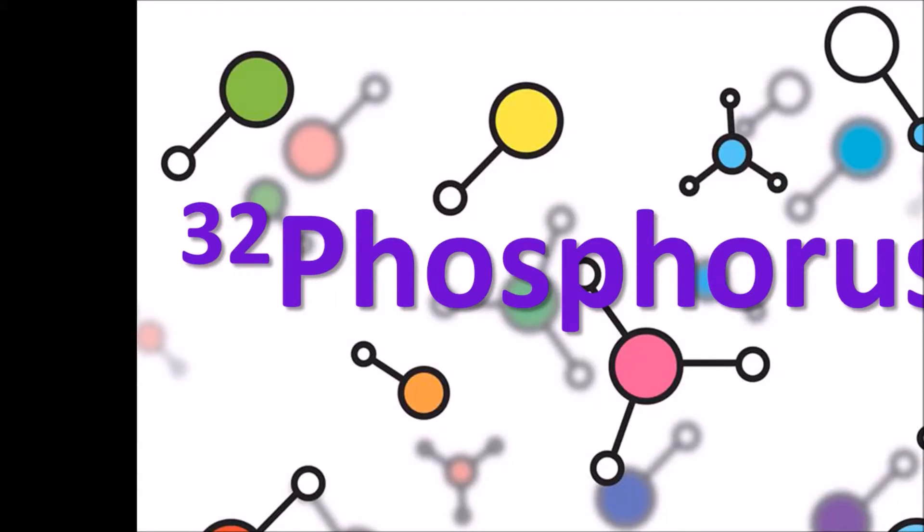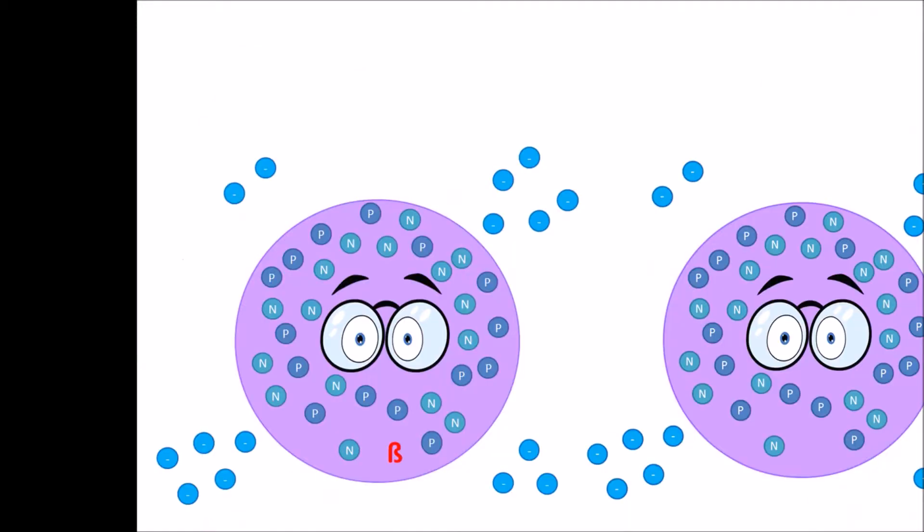Phosphorus-32 is a radioisotope that has broken off its naturally occurring isotope phosphorus and gives off beta radiation. So what is the beta particle I'm talking about? Well, think about a beta particle as an electron.